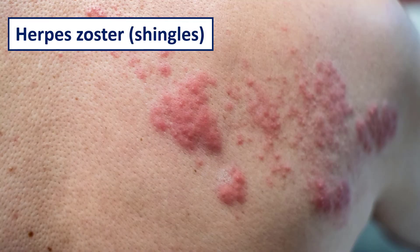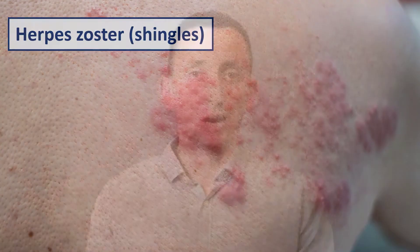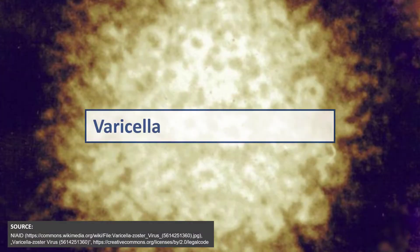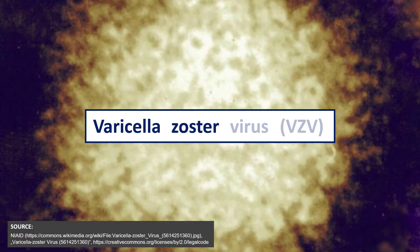So basically, the name of the virus tells you what it can cause. First infection: varicella. Reactivation: herpes zoster, or shingles.